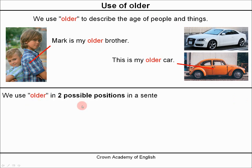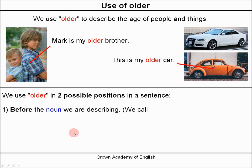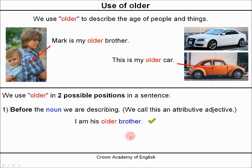We use older in two possible positions in a sentence. Number one: before the noun that we are describing, and this position we call it an attributive adjective. For example: I am his older brother — older is before the noun that we are describing, so this is the attributive adjective.